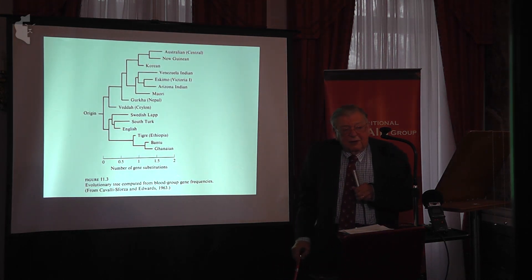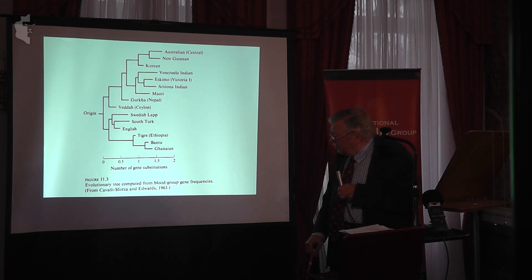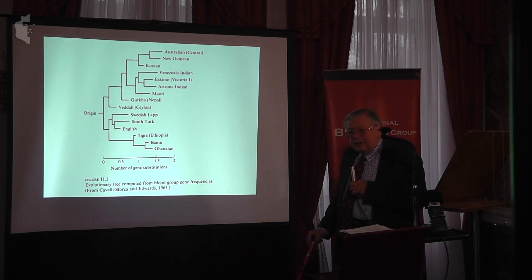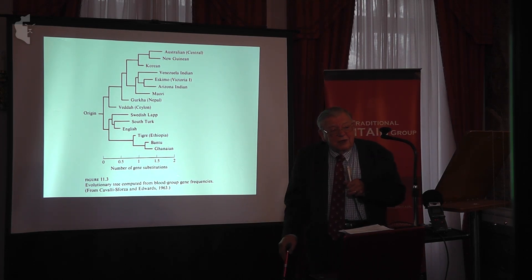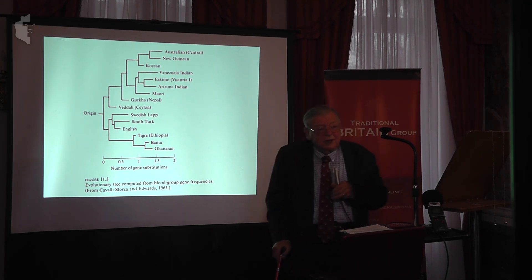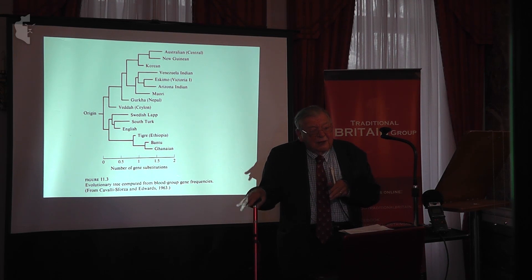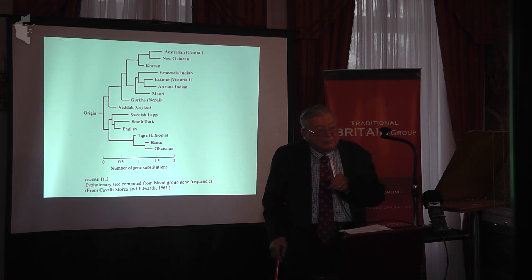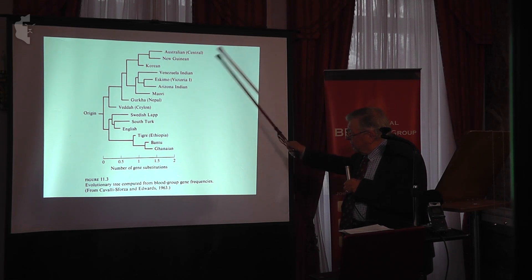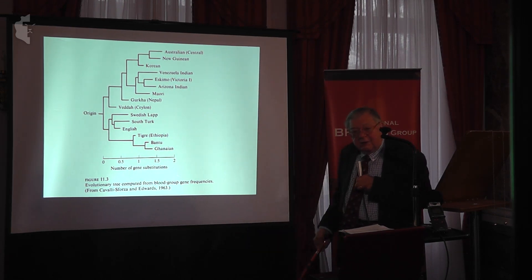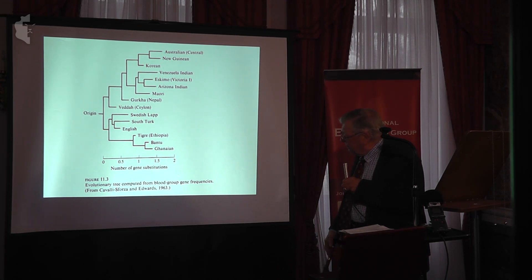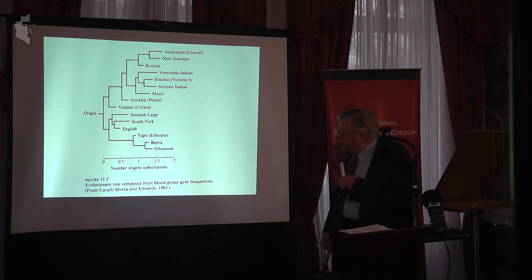The question is how to take that further. My colleague Cavalli-Sforza, with whom I did much work, and another colleague Anthony Edwards, took the blood groups known at the time — maybe just half a dozen or so genetic differences — and asked: can we look at the relationships between populations by how similar their frequencies of these genetic types are? Using quite fancy statistics, they got to an evolutionary tree of world populations that, given how little data they were using, was remarkably good.